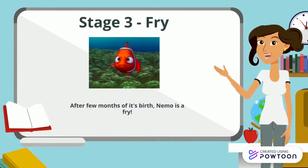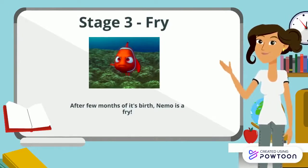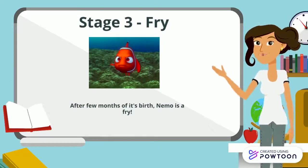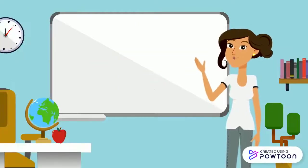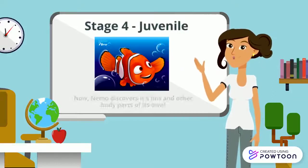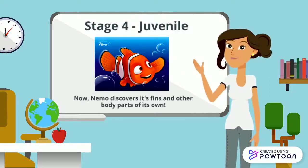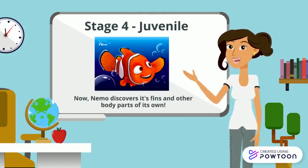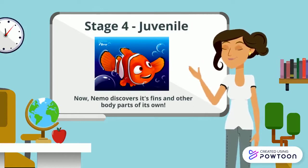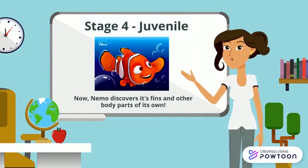Stage 3: the fry. In the first few months, a young fish is called fry, which has the ability to feed on its own. Stage 4: the juvenile. In this stage, the fish develops more adult-like characteristics like fins, color, and other body parts.